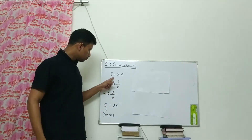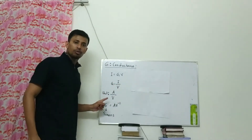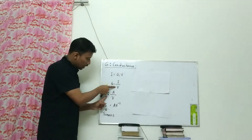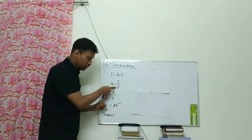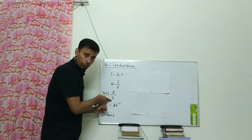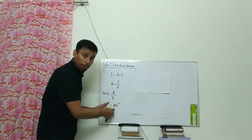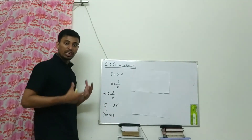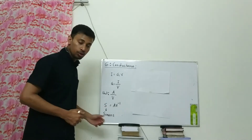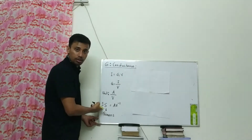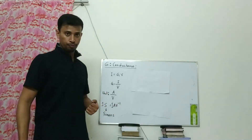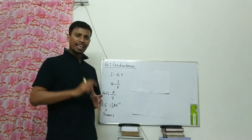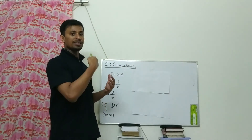Conductance G equals I divided by V — current divided by voltage. What is the unit of G? At the top we have current in amperes, at the bottom we have voltage in volts, so the unit is ampere per volt. This is also known as Siemens, capital S. So the unit of conductance is Siemens, and 1 Siemens equals 1 ampere per volt. G is also defined as the inverse of resistance.